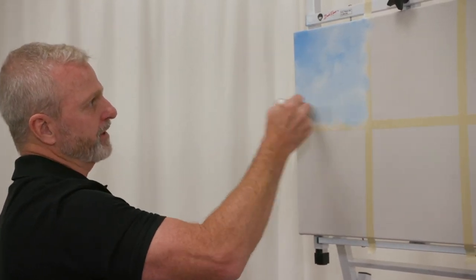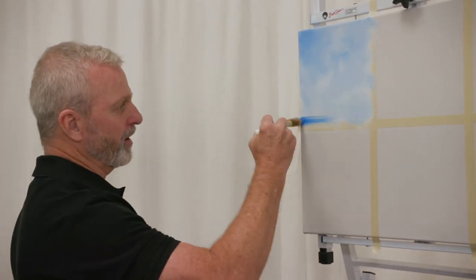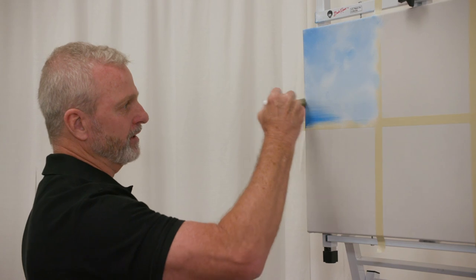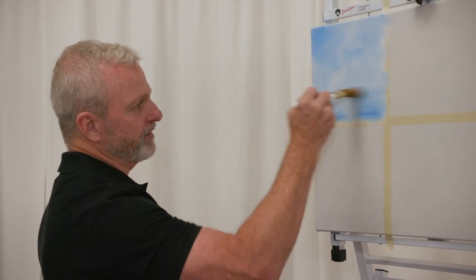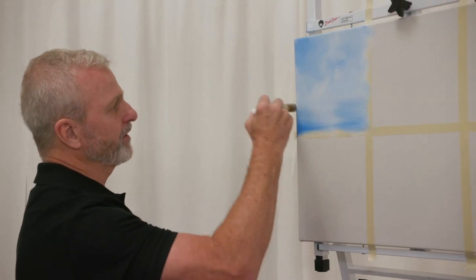We use Bob Ross odorless thinner to clean them. So I've got a nice little instant sky there. I think maybe I'd like to have some water today. If I just pull the brush horizontally, I can get the hint of a little bit of a pond or lake here in the painting very quickly.